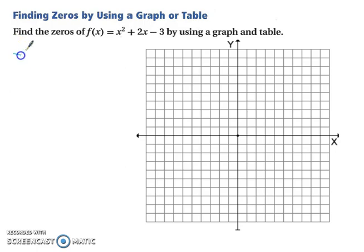So we have the opposite of b divided by 2 times a, and in the end, that gives us negative 1. That's our x value. To find our output or y value, we're going to substitute that back in. So we have negative 1 squared plus 2 times negative 1 minus 3, and that gives us a value of negative 4. So our vertex is at negative 1, negative 4.